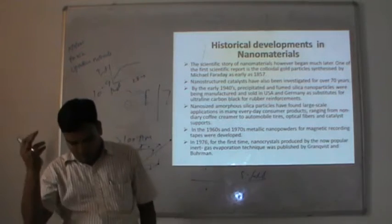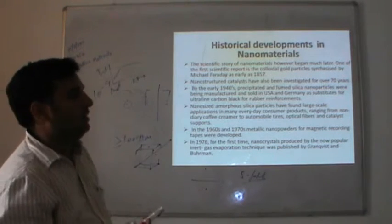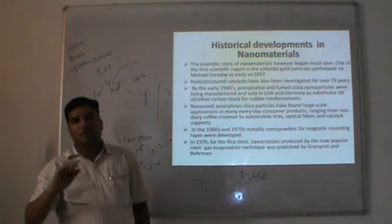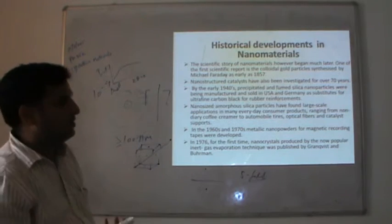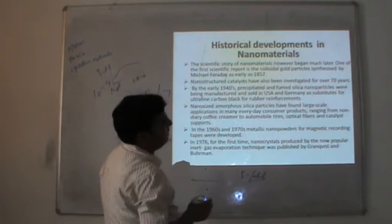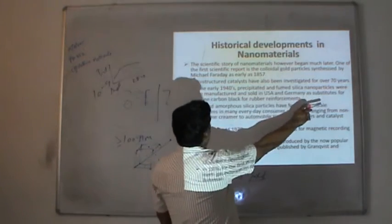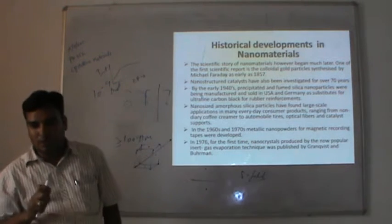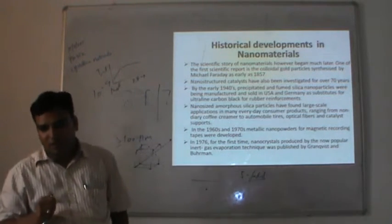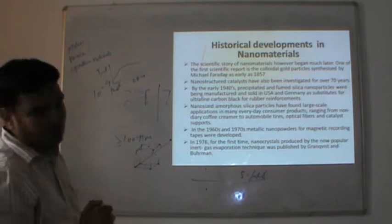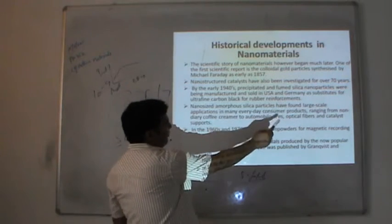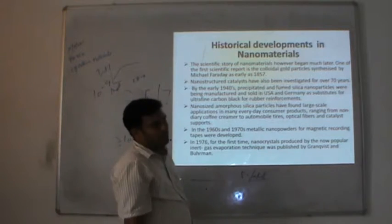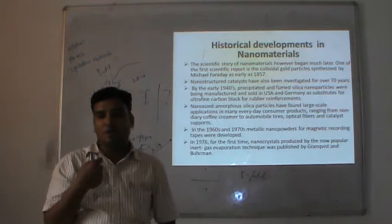The best example from the rubber industry: rubber contains poly-carbon structures, and silicon nanoparticles used in rubber were known to the rubber industry. Nano-sized silica particles have found large-scale applications in many everyday consumer products ranging from non-dairy coffee creamer to automobile optical fibers and catalyst supports. These things were known to the world but not under the name of nanotechnology — we were using them, but they were nanosized. In the 1960s and 70s, metallic nanoparticles were used in magnetic recording, which was important for early computer storage.